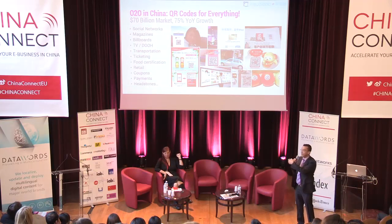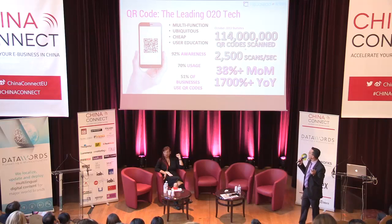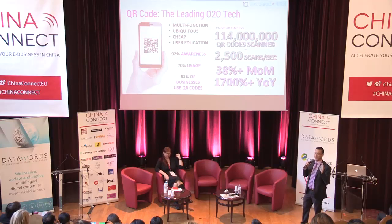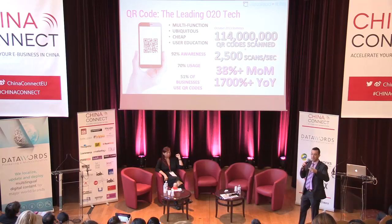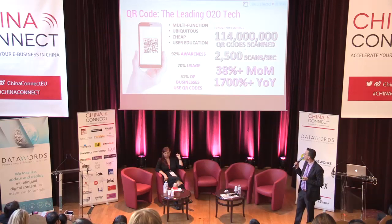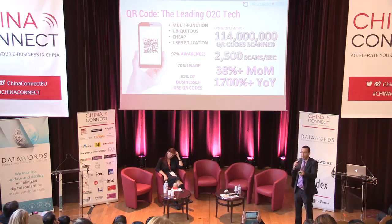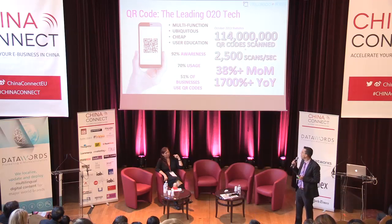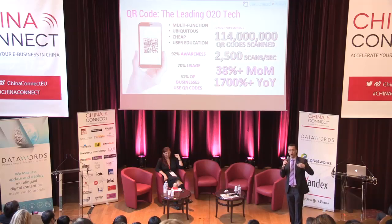QR codes are far more popular in China than anywhere else in the world. In France, about 70% don't know QR codes and about 30% have used them. In China, about 92% of smartphone users know what QR codes are, and about 70% have scanned them — WeChat has a lot to do with that. More importantly for businesses, over 51% of businesses in China use QR codes. If you want a WeChat channel, the only way to get there is through a QR code. And QR codes are growing tremendously in China.